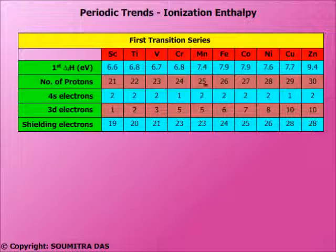Of course, we see a rise at certain points because the shielding electrons are the same and the effect of increase in proton number is predominant. The effect of electron pair repulsion doesn't matter too much.